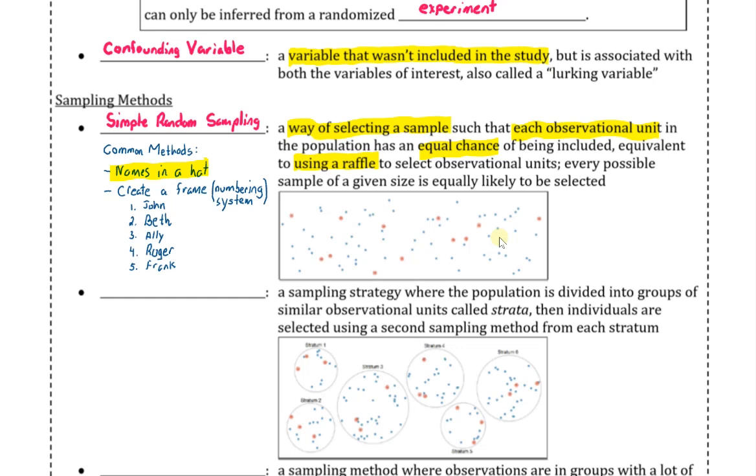Another common method is to create a frame. This is also called a numbering system. Each person in your sample or each person in your population would have a number associated with them. Then you could use a random number generator to generate a list of numbers. Then that list of numbers would tell you who would be included in your sample. This would be a little more sophisticated method, especially if you have a large population. This might be your preferred method.